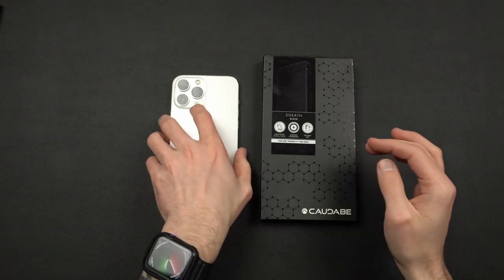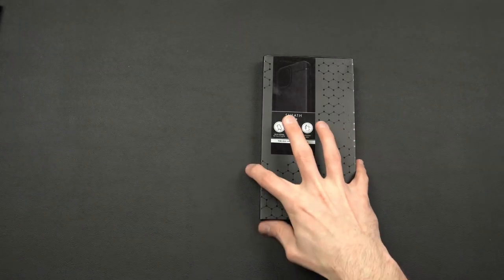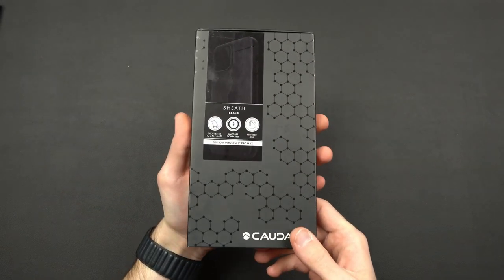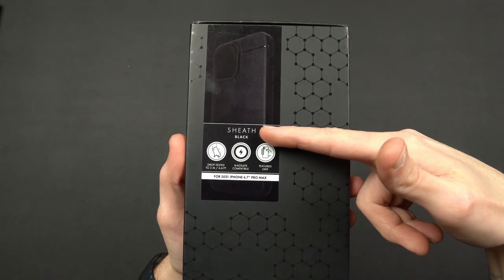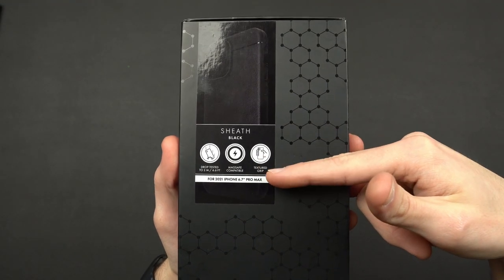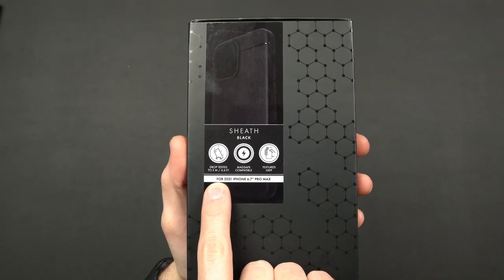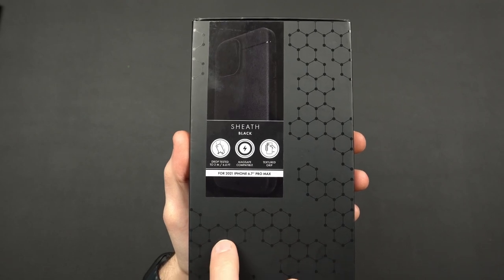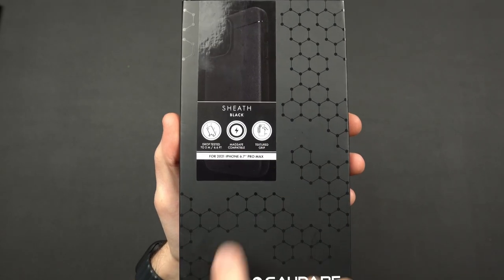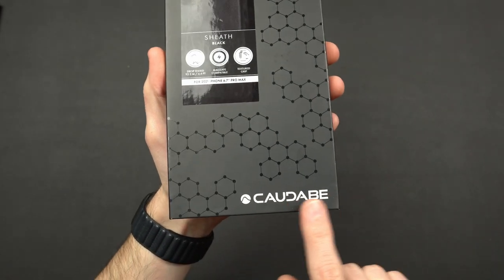We're going to put the phone to the side here. Taking a look at what you get on the packaging here - Kadabe Sheath. I did get the black colorway. Drop tested up to two meters or 6.6 feet, it is MagSafe compatible, textured grip for the iPhone 13 Pro Max.